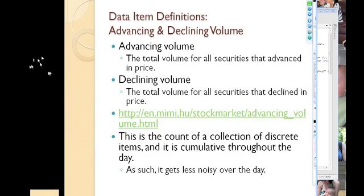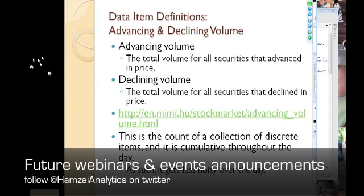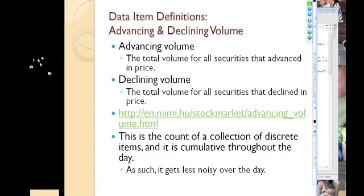Advancing and declining volume is slightly different in the sense that it's not a count of volume per se, but it's an accumulation of advancing and declining volume. You can see changes in advancing or declining volume over the course of the day because sometimes the volume trades sides. When the stock price is higher than the open, the volume is advancing; when it's lower than the open, the volume is declining.